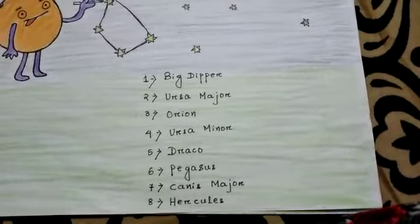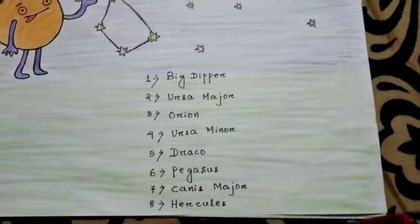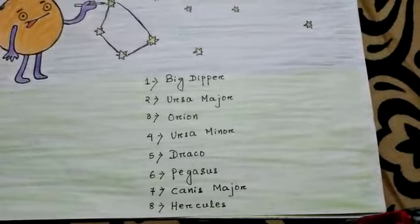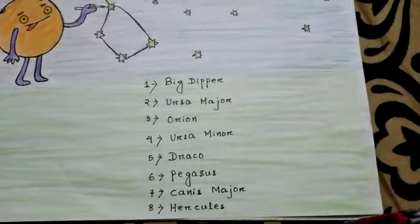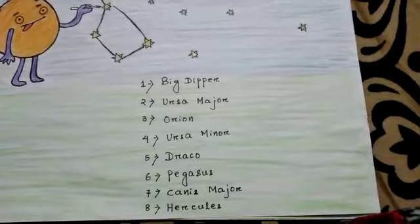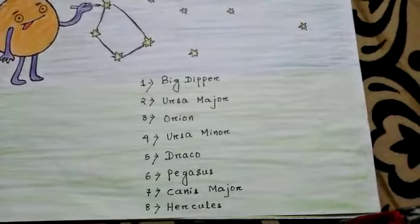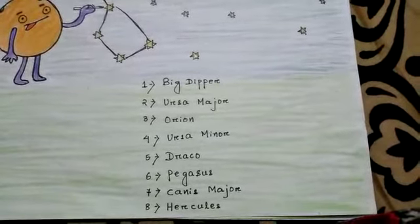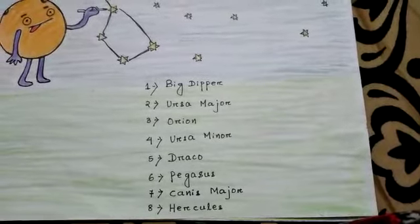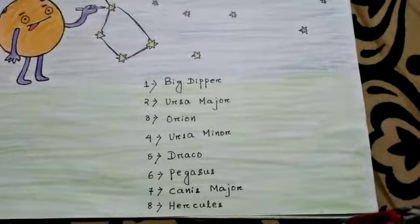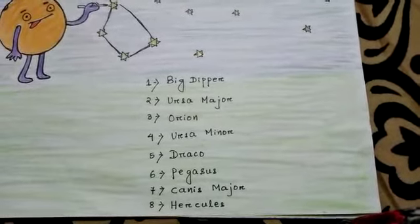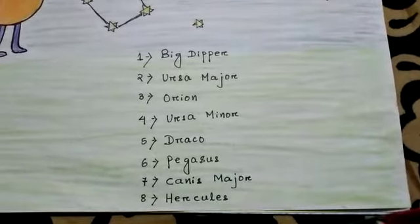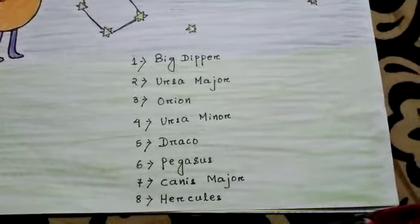The constellation which looks like the Great Bear is known as Ursa Major constellation. Number three: the constellation which looks like the hunter is known as Orion. Number four: the constellation which looks like the dragon is known as Draco.